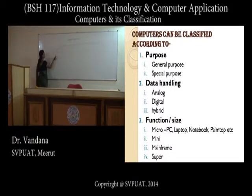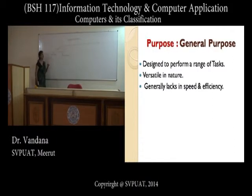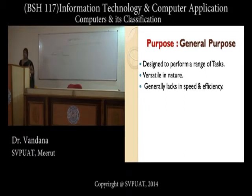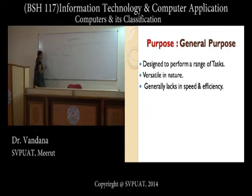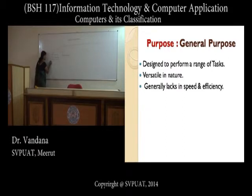According to purpose, computers can be classified into two major groups: general purpose computers and specific purpose computers. A general purpose computer is one used to perform a range of operations from scientific to business applications. These computers are designed to perform a range of tasks, making them versatile in nature. However, because they perform different types of jobs, they generally lag in speed and efficiency.